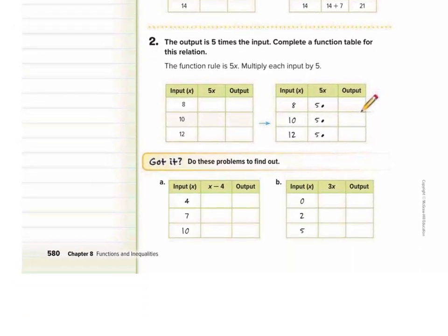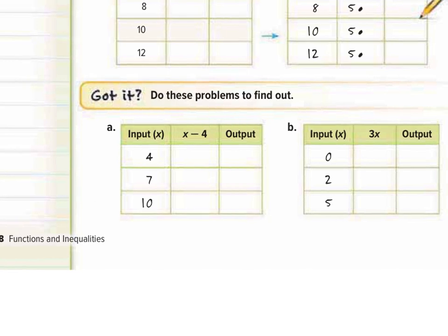We're going to scroll to the bottom and complete parts A and B together. We want to complete these function tables. We are given the inputs and the function rule, and we want to find the outputs. So if our first input is 4, we're going to plug that into the function rule and solve to find the output. The input of 4 gives us 4 minus 4.